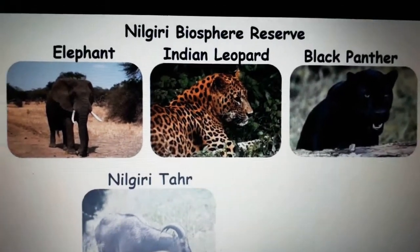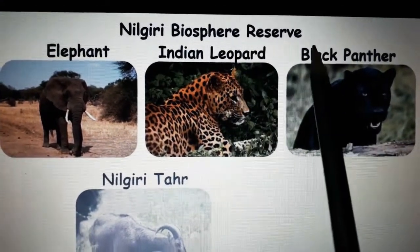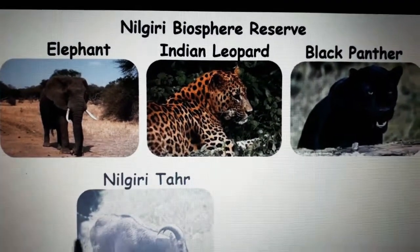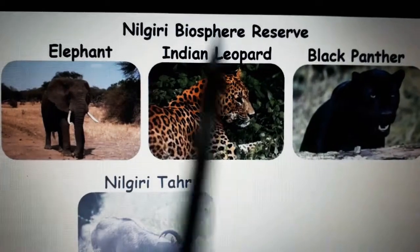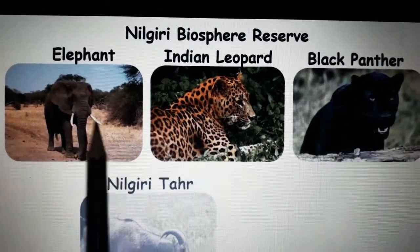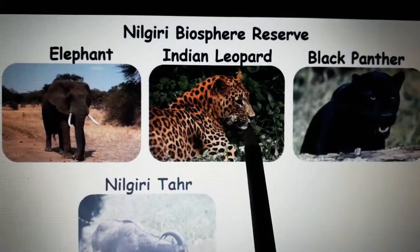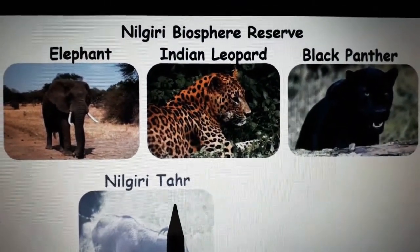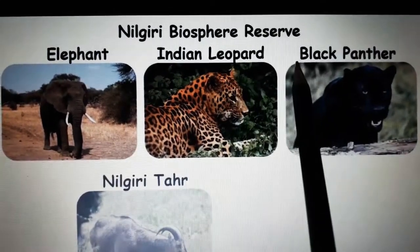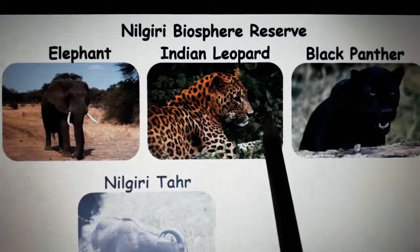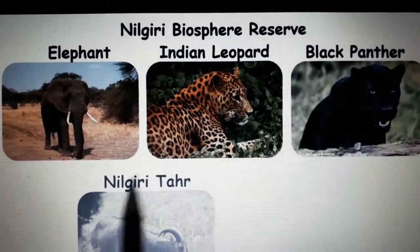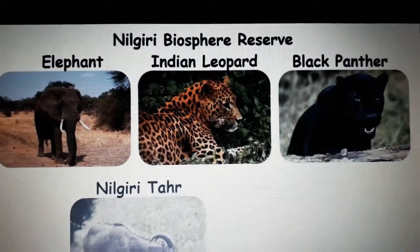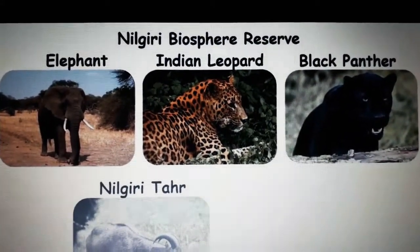Next place is Nilgiri Biosphere Reserve. Biosphere reserves protect animals, plants, and flowers. The animals protected here are Elephant, Indian Leopard, Black Panther, and Nilgiri Tahr. What are the animals protected in Nilgiri Biosphere Reserve? Elephant, Indian Leopard, Black Panther, Nilgiri Tahr. And here many different kinds of plants can be found.